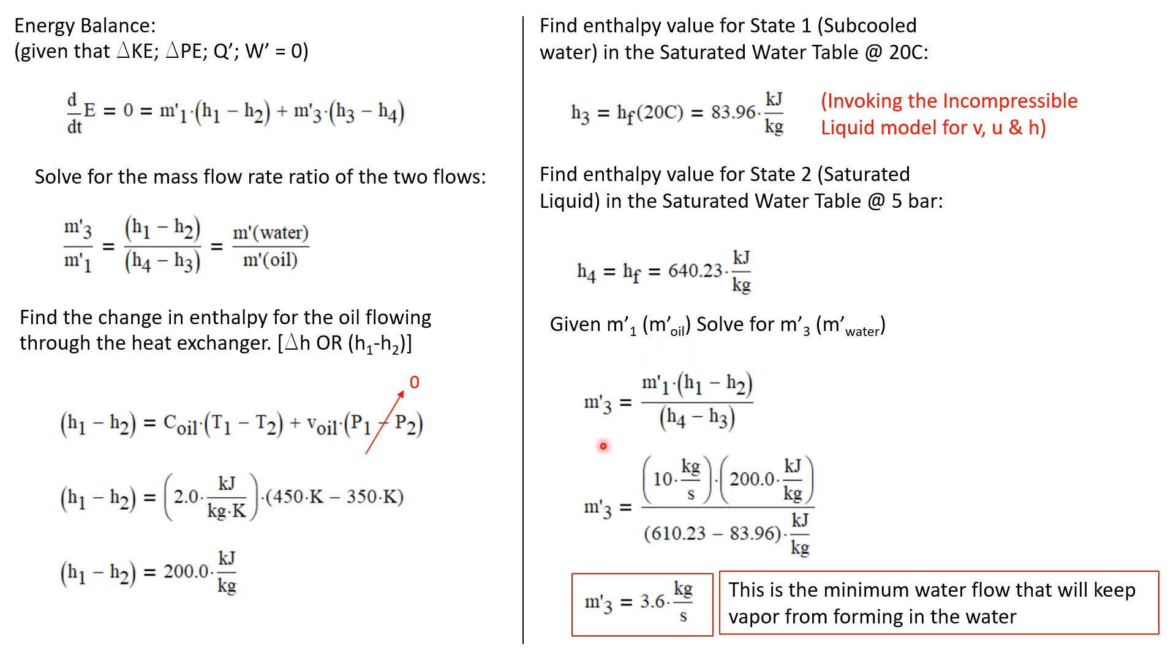So now we can go ahead and solve for the mass flow rate of the water under these conditions. It's the mass flow rate of the oil times the change in enthalpy for the oil divided by the change in enthalpy for the water. And we have all of these values. And we calculate that the mass flow rate at state three, that's the incoming water, is 3.6 kg/s. And we were asked for the range of flows that were allowable. So this is the minimum water flow rate that will keep vapor from forming in the water. We can have a higher flow rate, but we cannot have a lower flow rate.